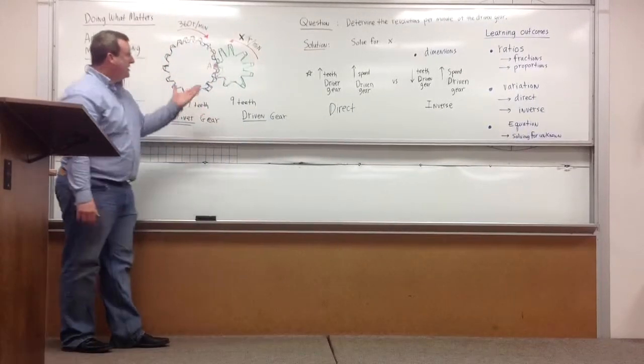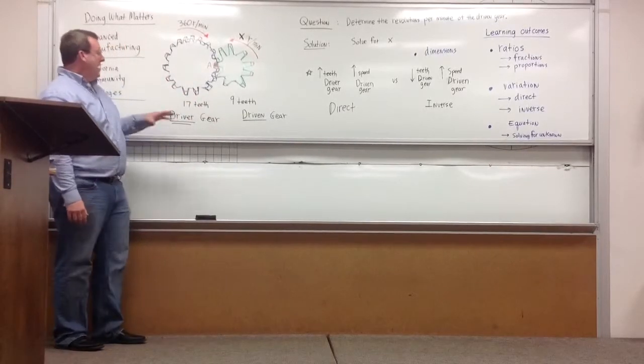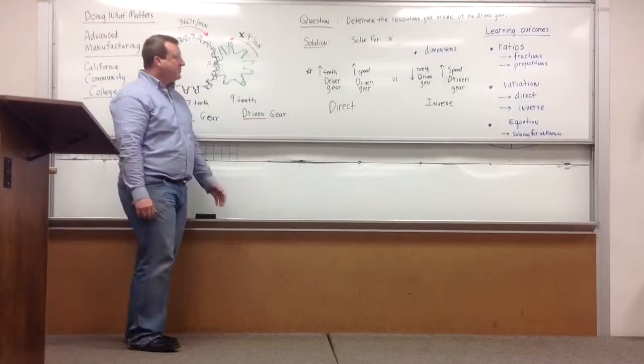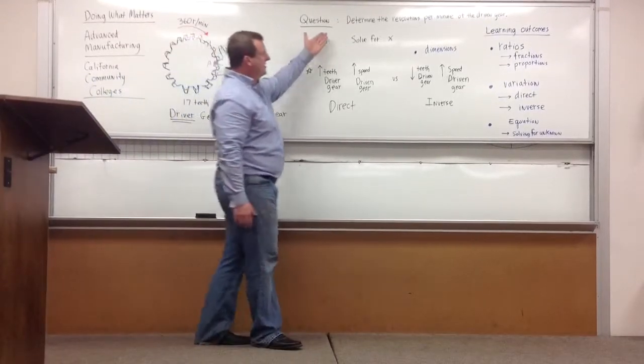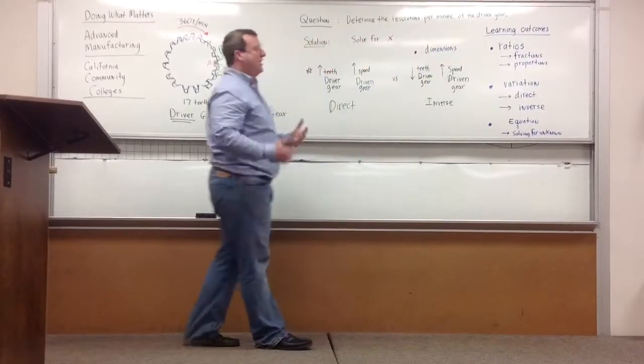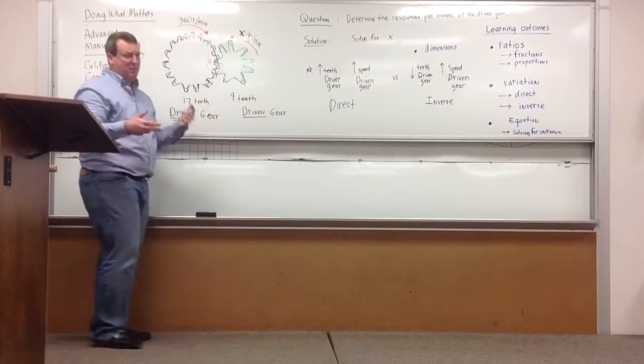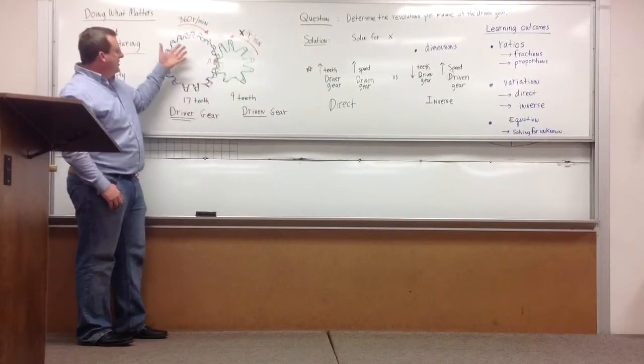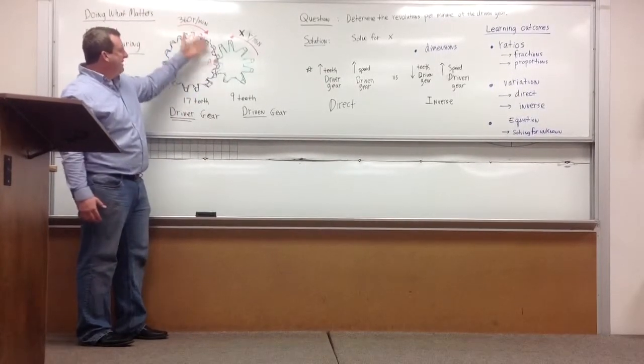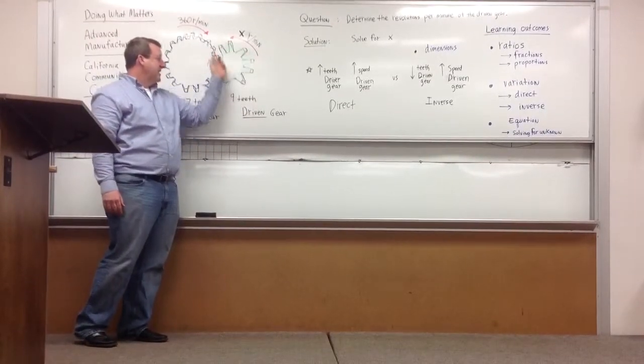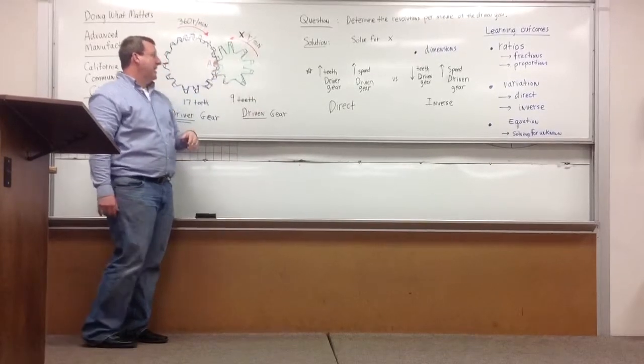We have a question where we have two gears, a driver gear that's 17 teeth and a driven gear that's 9 teeth. Our question is determine the revolutions per minute of the driven gear or get an idea of the relationship of speeds when you have gears of different sizes. So the driver gear is 360 revolutions per minute, and we are trying to figure out how fast the driven gear is going to be rotating.